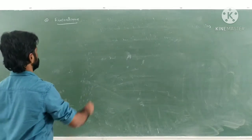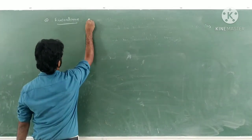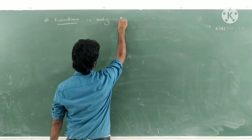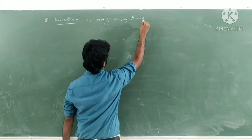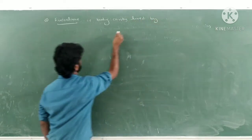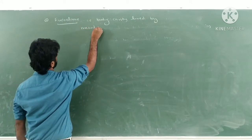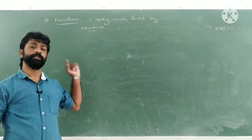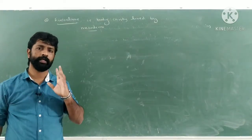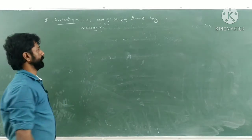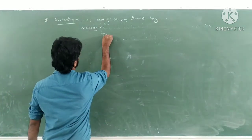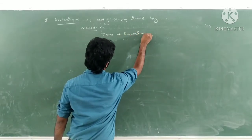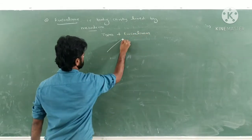Eucoelom means a body cavity which is lined by mesoderm. When the body cavity is lined by mesoderm, it is called eucoelom. This eucoelom is further categorized into two types based on its development.